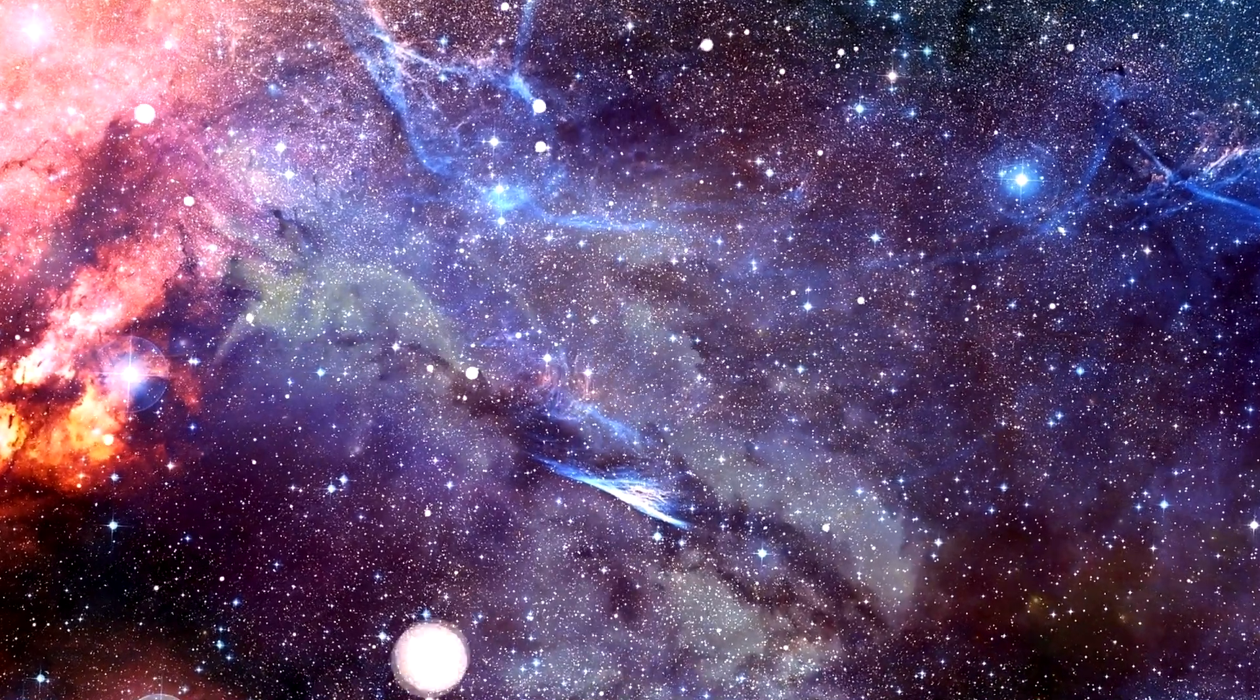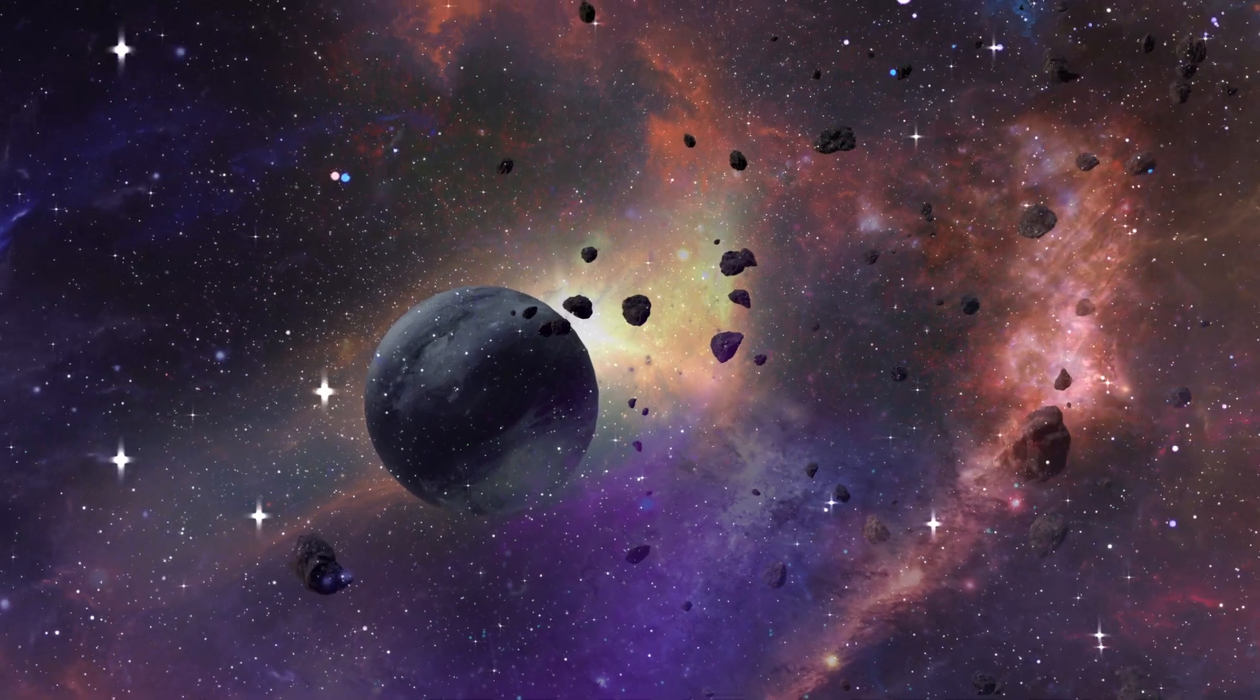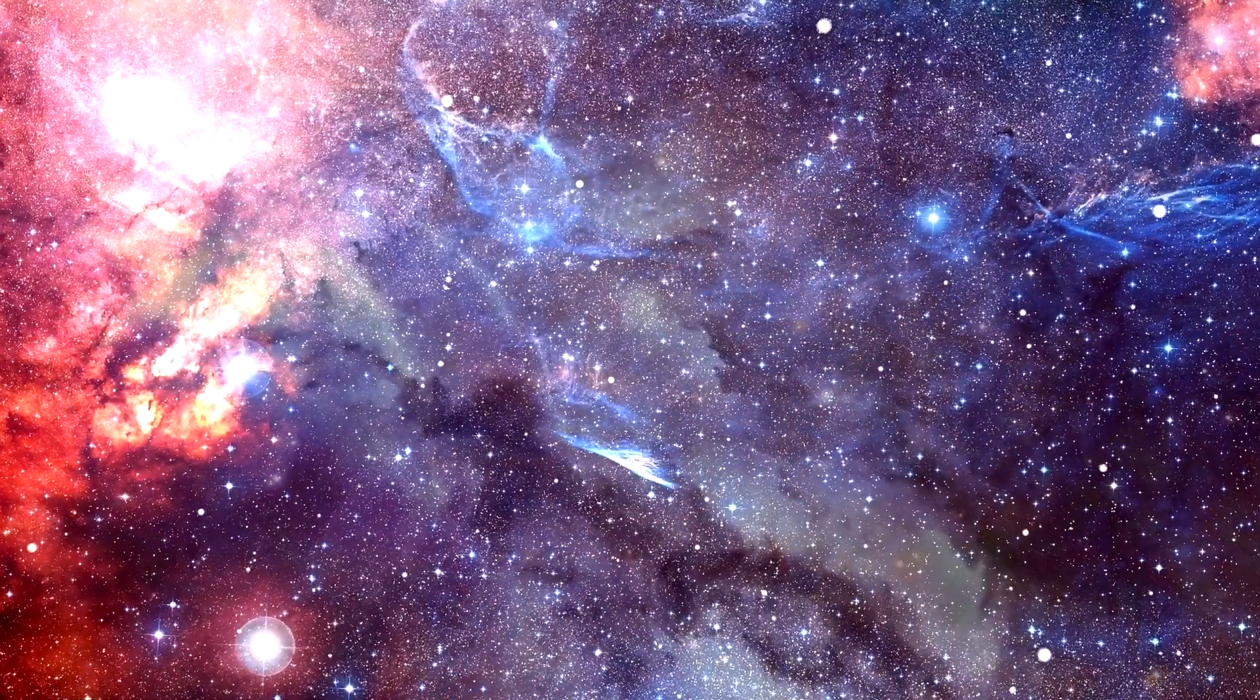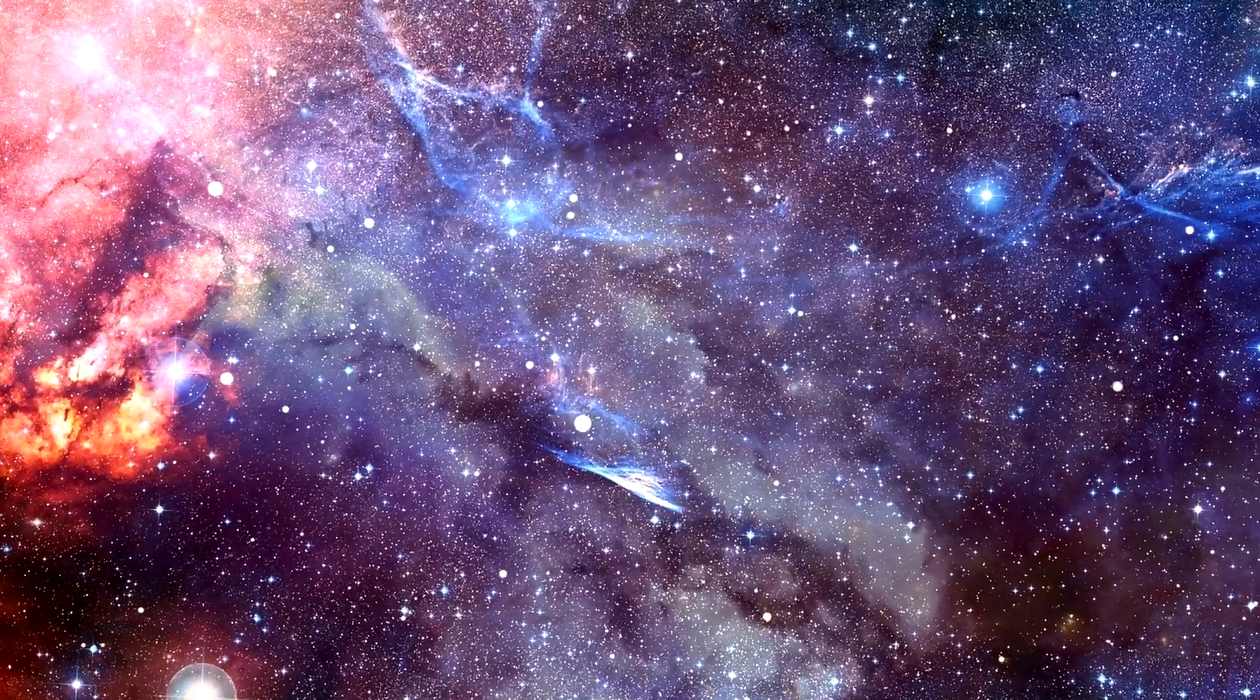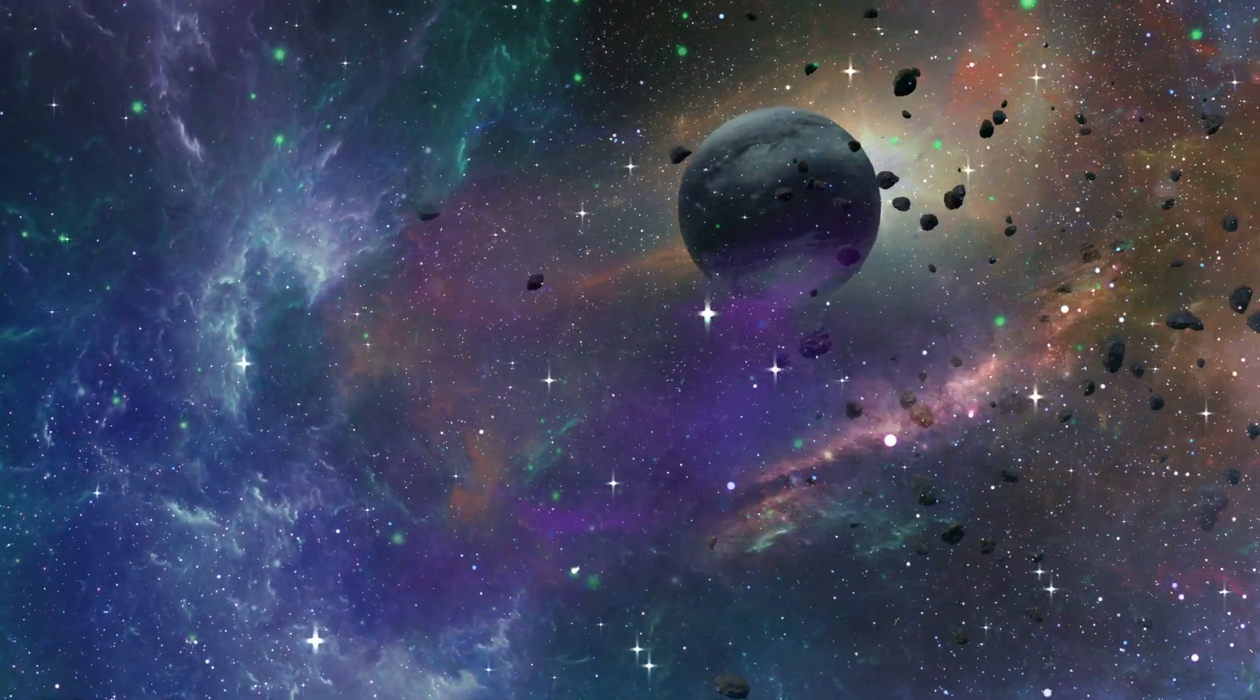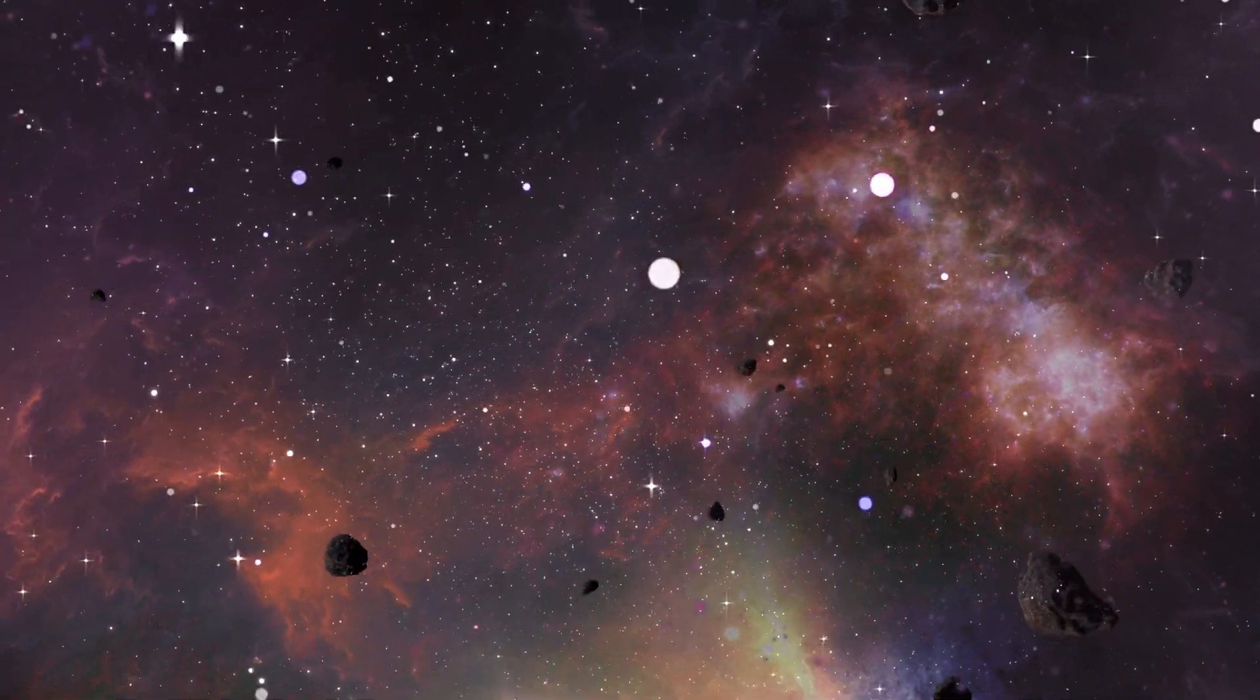Few people without a training in science can realize the huge isolation of the solar system. The Sun, with its specks of planets, its dust of planetoids, and its impalpable comets, swims in a vacant immensity that almost defeats the imagination. Beyond the orbit of Neptune, there is space, vacant so far as human observation has penetrated, without warmth or light or sound. Blank emptiness for twenty million times a million miles. That is the smallest estimate of the distance to be traversed before the very nearest of the stars is attained. And except for a few comets more unsubstantial than the thinnest flame, no matter had ever to human knowledge crossed this gulf of space. That is, until this strange wandering star appeared.